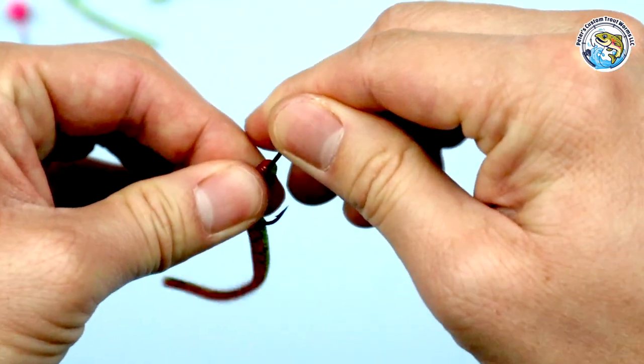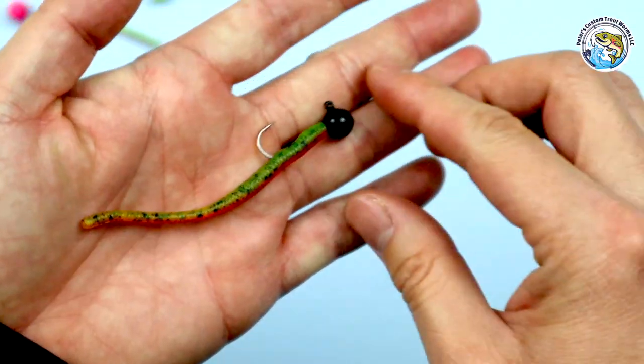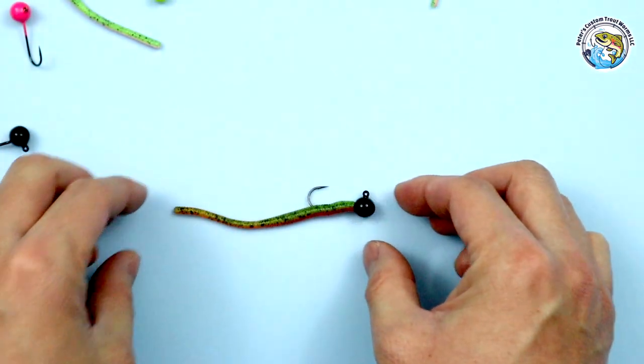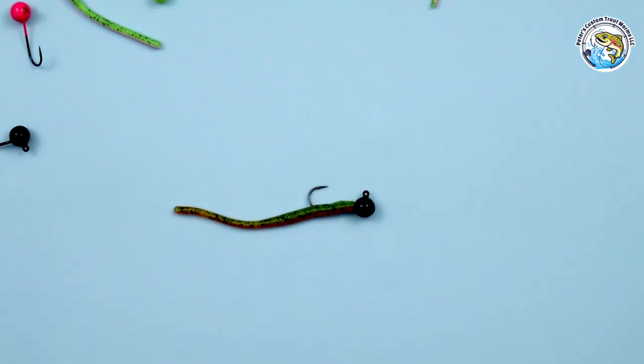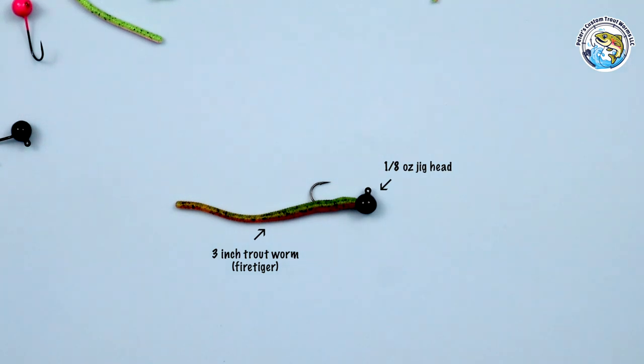We're gonna slide it up and now it's perfectly straight. So that's how you measure any kind of soft plastic bait with your hooks, with any kind of hook really. Make sure you do that and keep it nice and straight. That's how you rig your trout worms with a jig head.